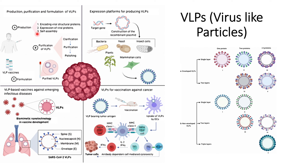Cell assembly is the step where we need to select an appropriate cell system that can self-assemble this viral structure, and now we can get a functional VLP. The next step after production is the purification of VLPs. There are three steps by which purification can be carried out: the first is clarification, then purification, and finally polishing — these can be considered primary, secondary, and tertiary purification.